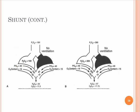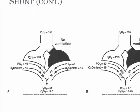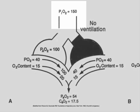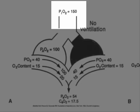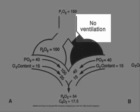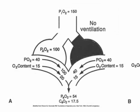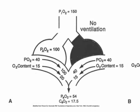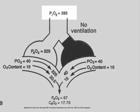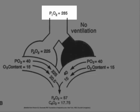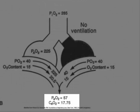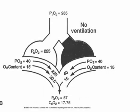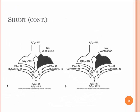This is a representation of the shunt. On the left side, version A, your PIO2 is 150. Once you factor in no ventilation, the average comes out to an arterial tension of 54 and an arterial content of 17.5. Version B on the right side, where PIO2 is 285, shows very little difference — the arterial tension is 57 and the CAO2 is 17.75. Adding extra oxygen does not influence the outcome; it makes very little difference in how much oxygen gets to the blood.